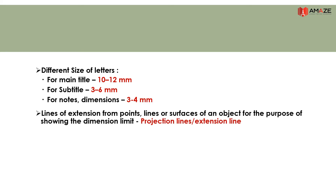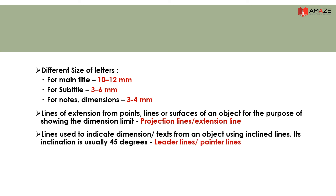Lines extending from points or surfaces of an object for the purpose of showing the dimension limit are called projection lines or extension lines. Lines used to indicate a dimension or text from an object using inclined lines — usually at 45 degrees inclination — are called leader lines or pointer lines.